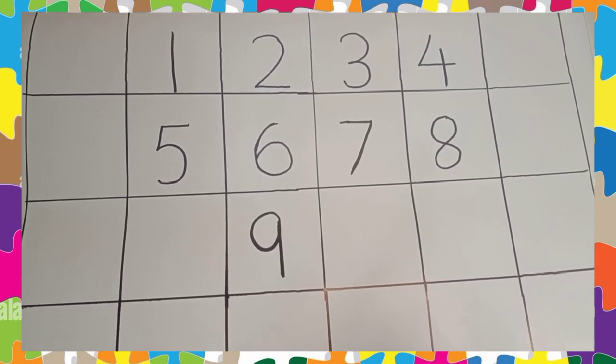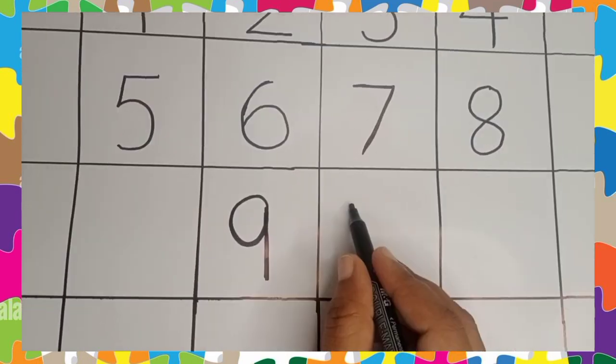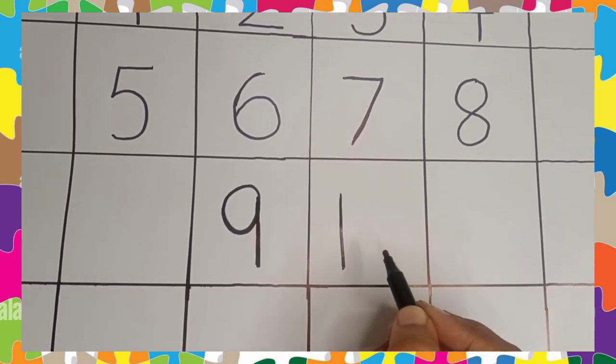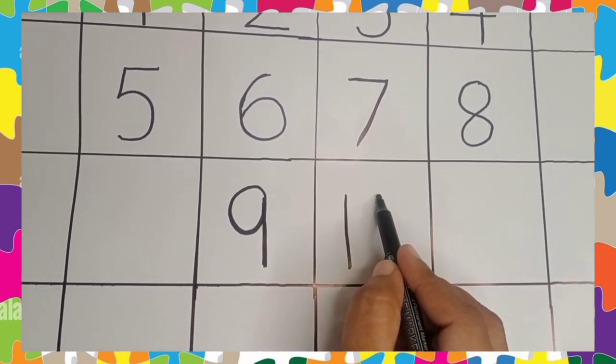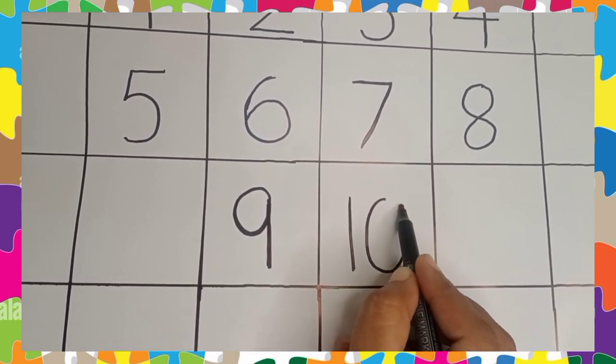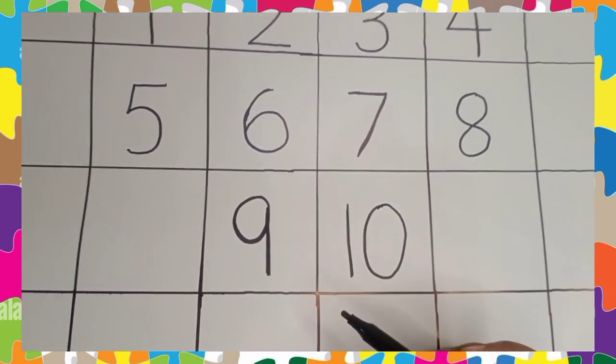To write the number 10, you know you have to write 1 first. Means down and down. Then for 0, round and round. This makes the number 10.